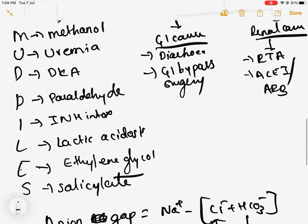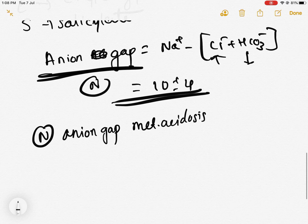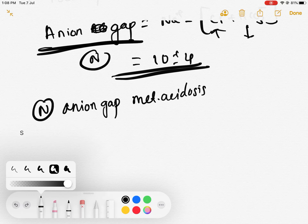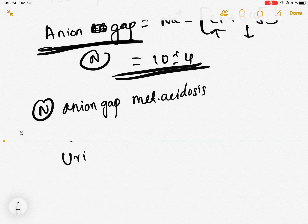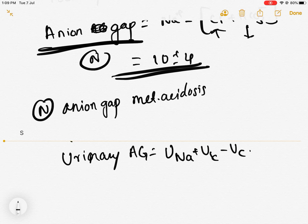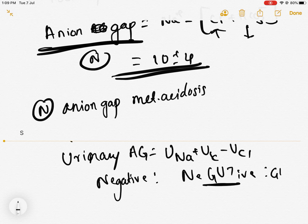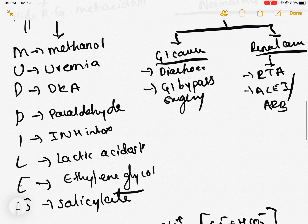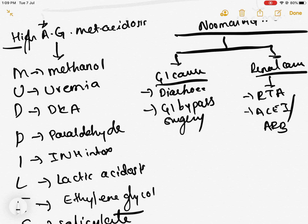If the urinary anion gap value is negative, it indicates a GI cause. If the value is positive, it indicates a renal cause. This is how to differentiate between renal and GI causes in normal anion gap metabolic acidosis.